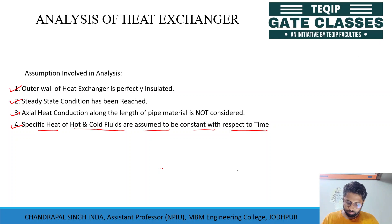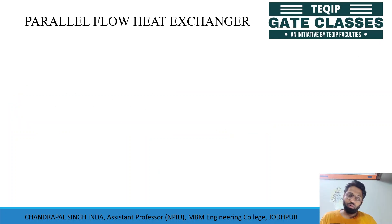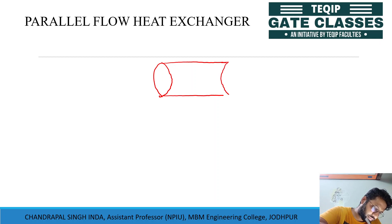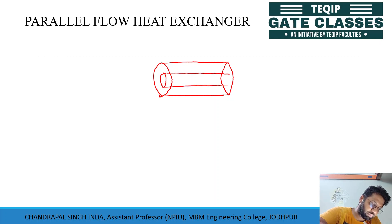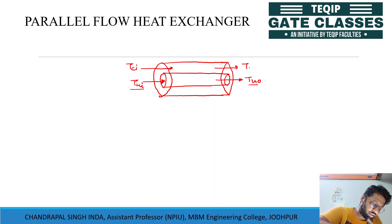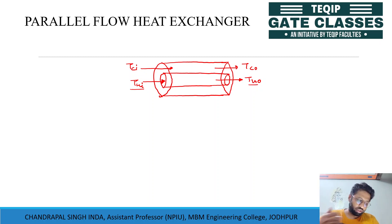For the parallel flow heat exchanger, the fluid flows in the same direction. Consider a concentric tube heat exchanger where the hot fluid enters at temperature T_HI and exits at T_H outlet, and the cold fluid enters at T_CI and exits at T_C outlet — both flowing in the same direction.